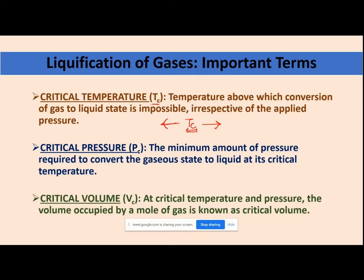The second important term is critical pressure. Critical pressure is the minimum amount of pressure required to convert the gas state to the liquid at its critical temperature.